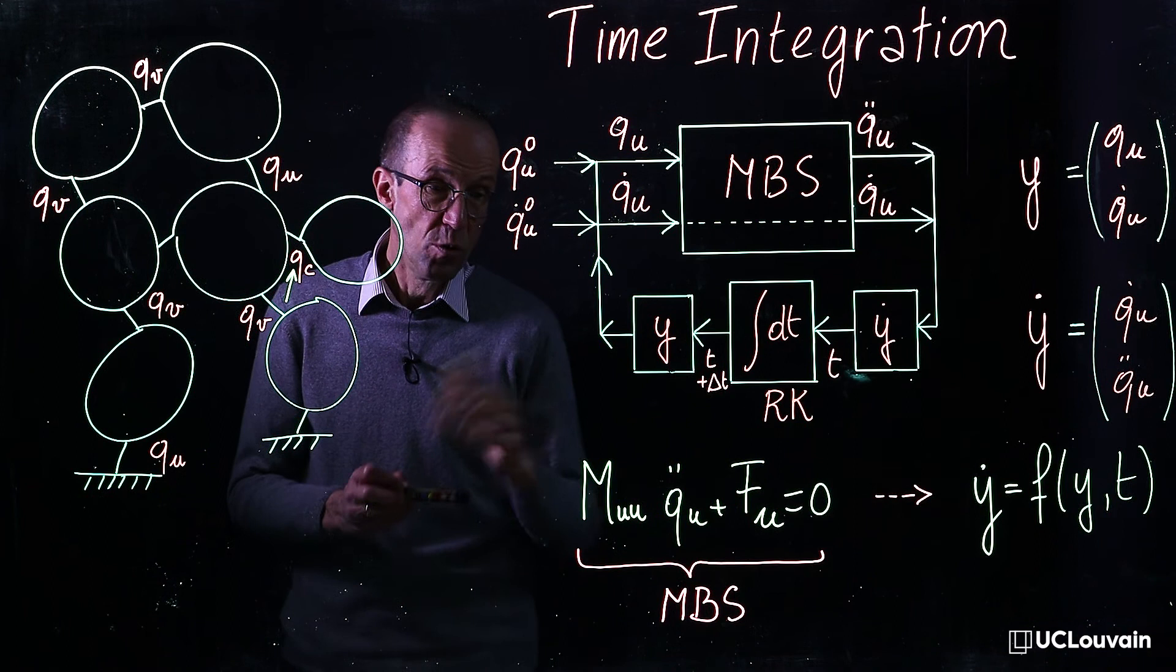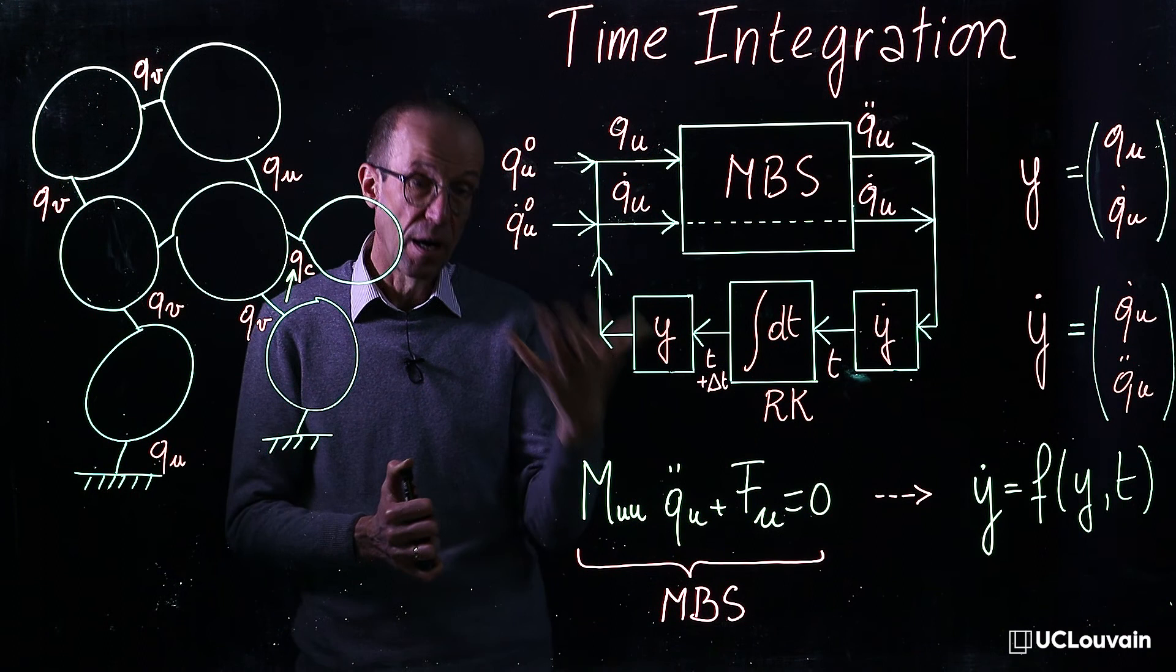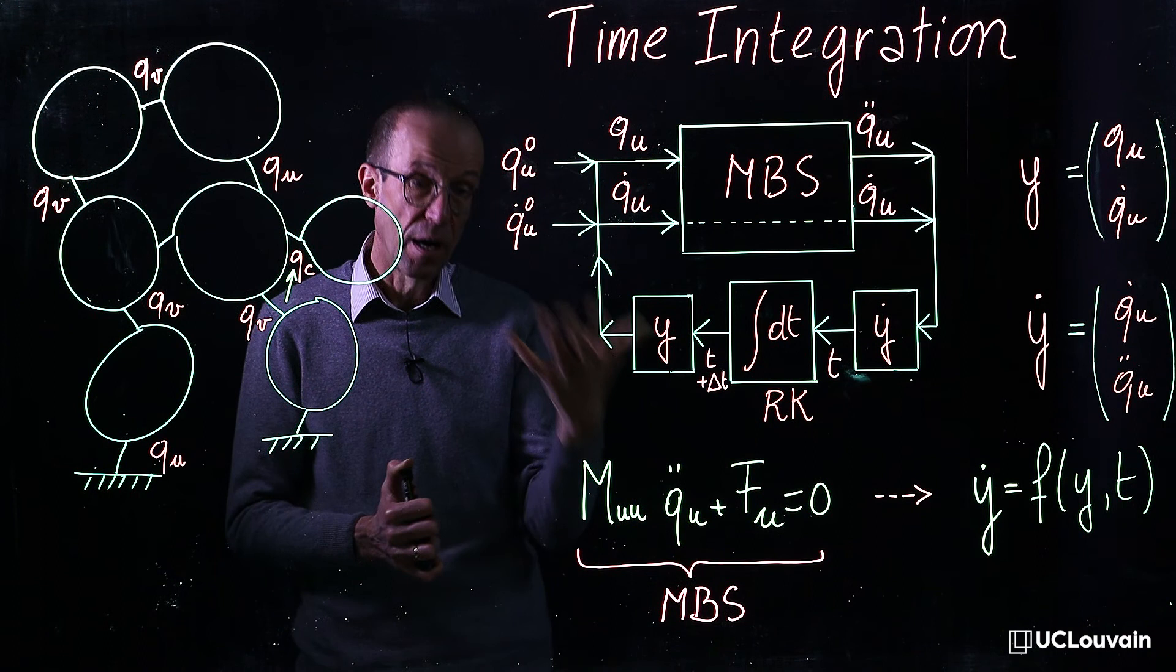This allows you to obtain any kind of transient motion, such as that of a car, as shown in this video made from a multi-body time integration.